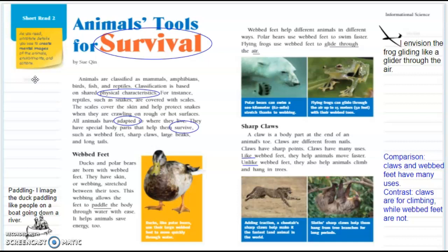They have special body parts that help them survive, such as webbed feet, sharp claws, large beaks, and long tails. And you'll notice that I circled physical characteristics, adapted, survive, but there are a couple more in there if you can try to figure out what those are.